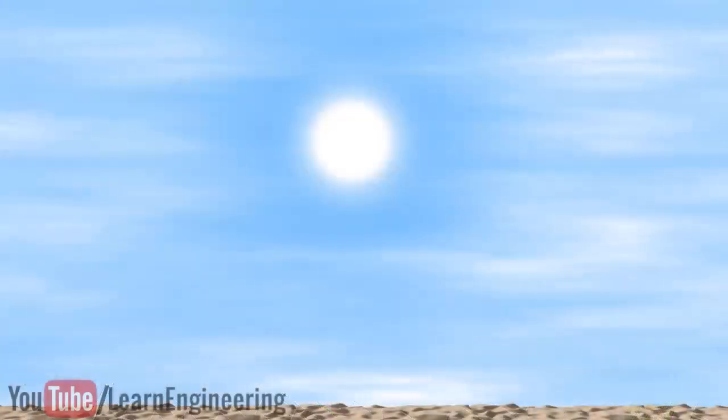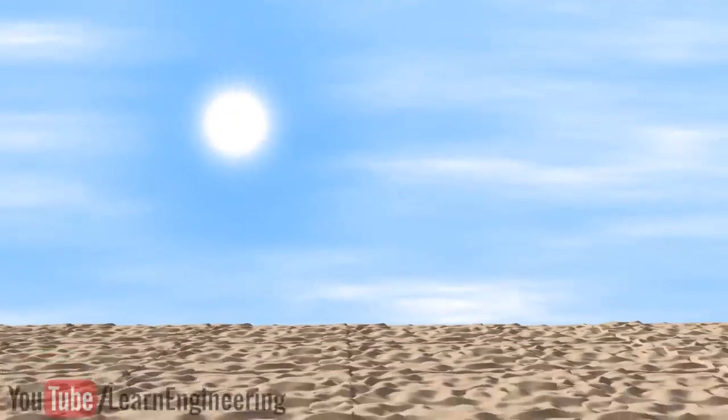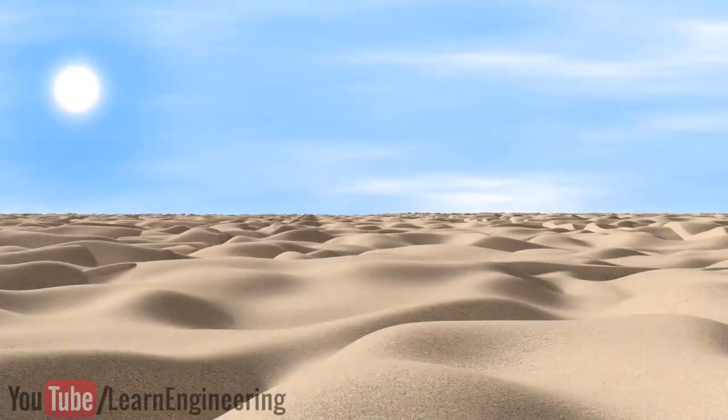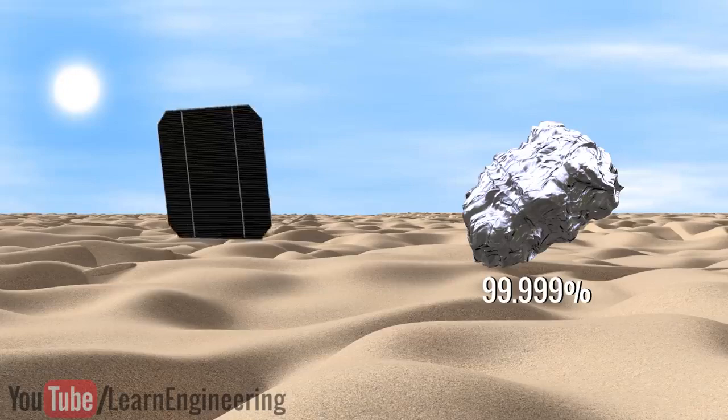Energy from the sun is the most abundant and absolutely freely available energy on planet Earth. In order to utilize this energy, we need help from the second most abundant element on Earth, Sand. The sand has to be converted to 99.999% pure silicon crystals to use in solar cells.